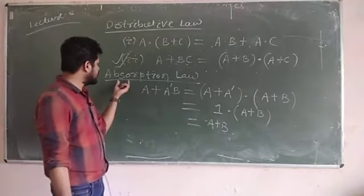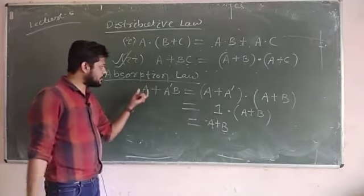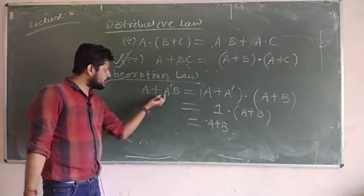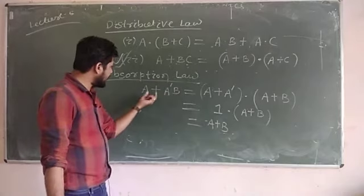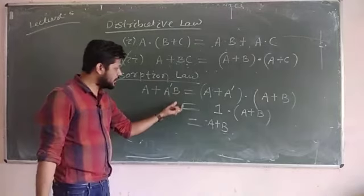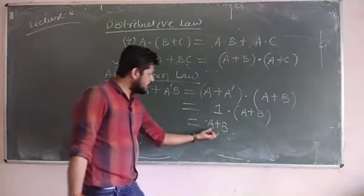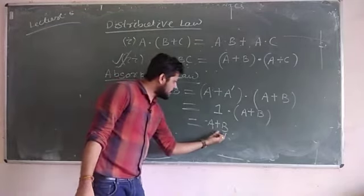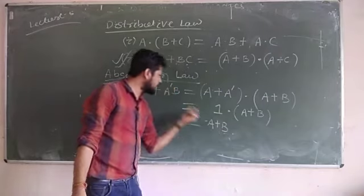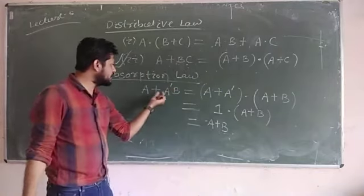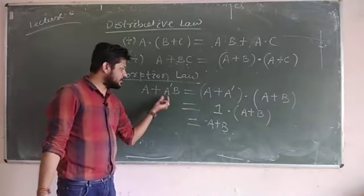That is why this law is known as the absorption law. Here we have A OR (A complement · B), and after the reduction we got A OR B. Here A complement is redundant.